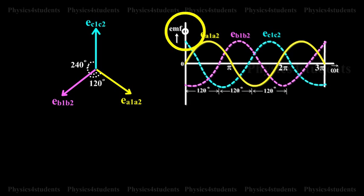The EMFs induced and phase differences in the three coils A1-A2, B1-B2, and C1-C2 are shown in the animation.